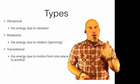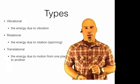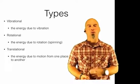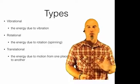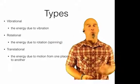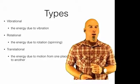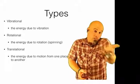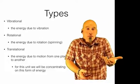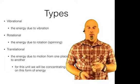So the three types of kinetic energy: vibrational, rotational, translational. Say that one five times fast. Mainly what we're going to be doing is probably going to be mainly translational. We're going to be doing the kinetic energy as an object moves from one place to the next. For this unit, we'll be concentrating on this form of energy.